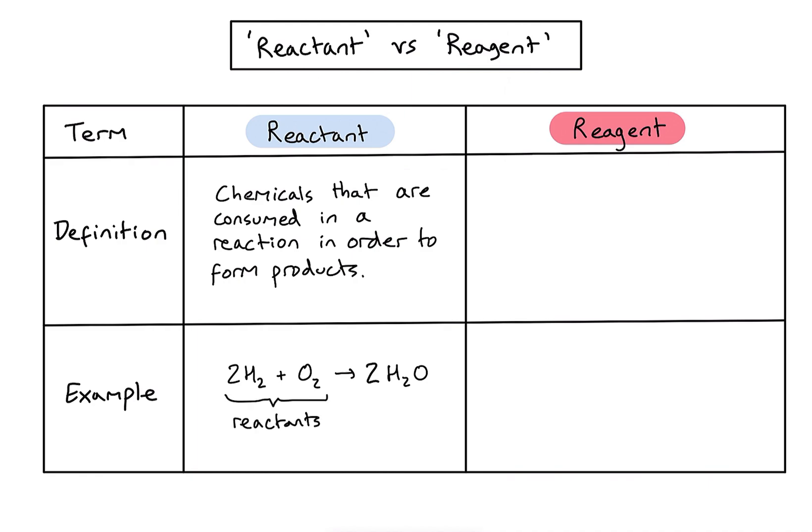So that's true of any chemical equation. The things that you draw on the left hand side are going to be your reactants because they will change. We will have bond breaking, bond making in order to form products.